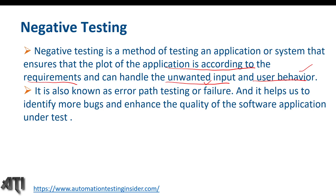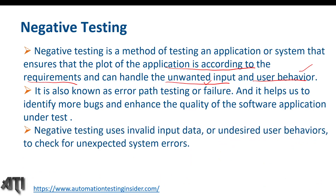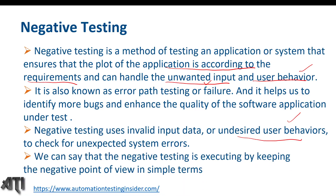It is very important to perform negative testing. As a tester, our intention should be to break the system by thinking about all permutations and combinations. Negative testing uses invalid input data or undesired user behaviors to check for unexpected system errors. It's not just about providing invalid values — we should also test for undesired user behaviors, like the loan application example where changes in one product should not impact another. Negative testing is executed by keeping a negative point of view.